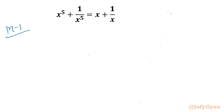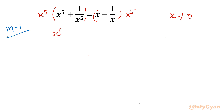The denominator cannot be 0, so x cannot be 0. I will multiply both sides with x power 5, since x is non-zero. So if I multiply with x power 5, the equation will become x power 10 plus 1 equal to x power 6 plus x power 4.